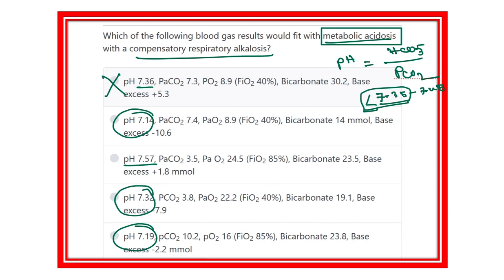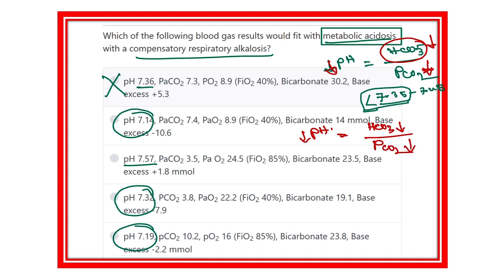In metabolic acidosis, pH is reduced. The metabolic portion — which is bicarbonate — reduces first, causing the pH to fall. The body does not permit excessive pH changes, so for compensation, the partial pressure of carbon dioxide also reduces. So in metabolic acidosis: bicarbonate decreases, and PCO2 decreases for compensation of pH.